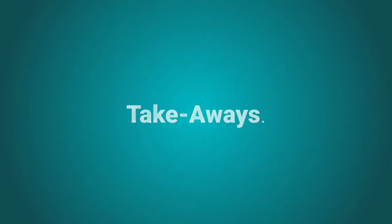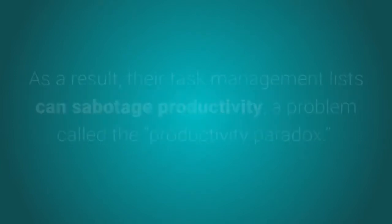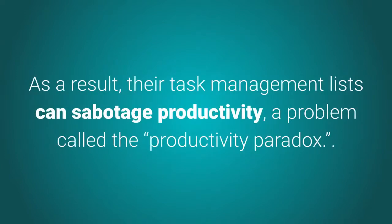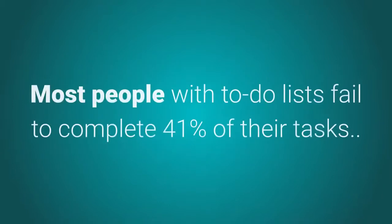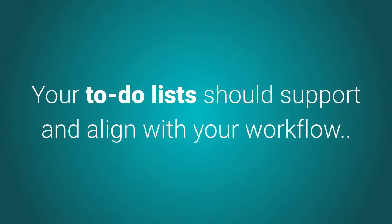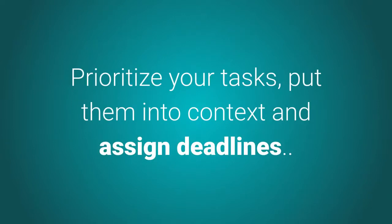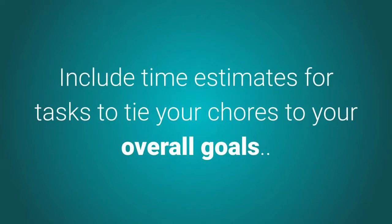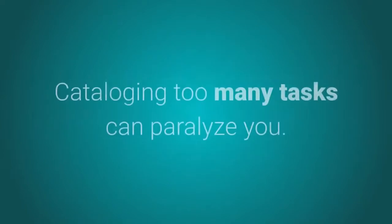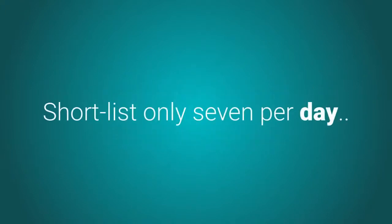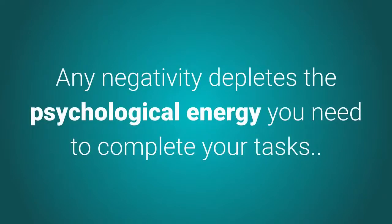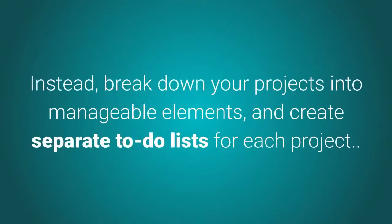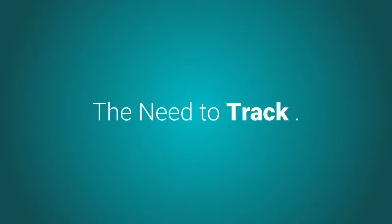Takeaways: Many people don't know how to use to-do lists correctly. As a result, their task management lists can sabotage productivity — a problem called the productivity paradox. Most people with to-do lists fail to complete 41% of their tasks. Your to-do lists should support and align with your workflow, prioritize your tasks, put them into context, and assign deadlines. Break your tasks into segments according to project type or location, include time estimates, and tie your chores to your overall goals. Keep short lists — only seven per day.